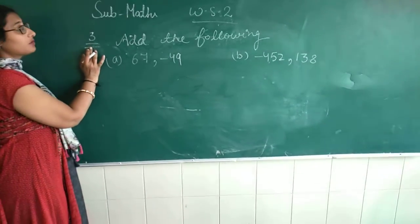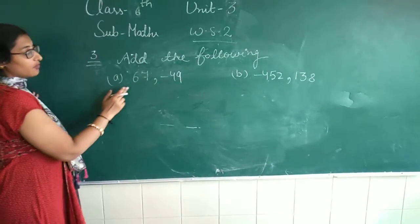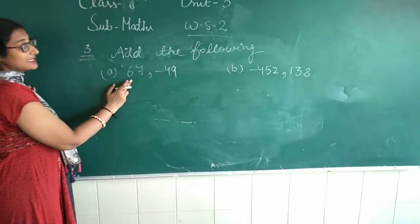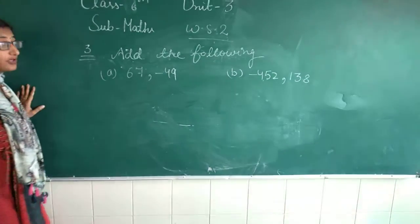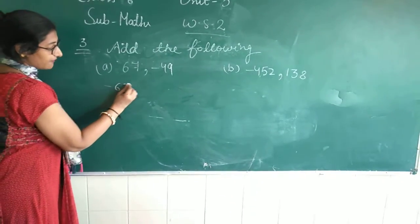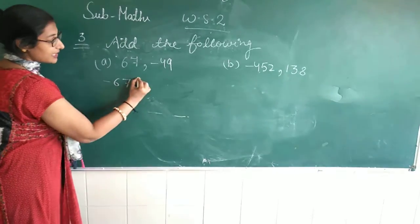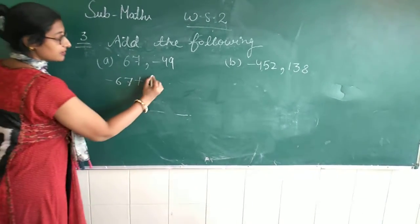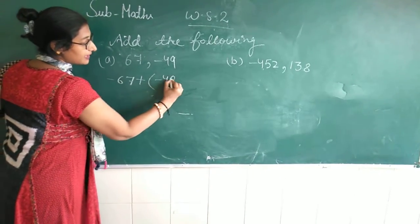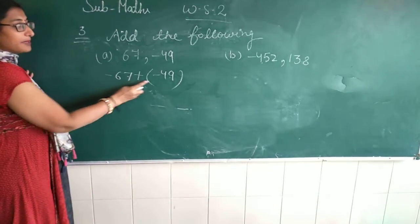we will do our worksheet third. Add the following. Part A is 67 minus 49. 67, add the sign in the letter, plus. This is minus 49. Plus minus, minus.